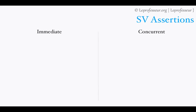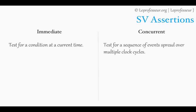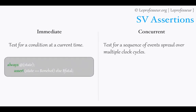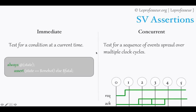Broadly, SystemVerilog assertions can be classified into immediate and concurrent assertions. Immediate assertions test for a condition at the current time. Concurrent assertions test for a sequence of events spread over multiple clock periods. For example, an immediate assertion can check whether the state of a state machine is one-hot encoded or not — if not, you display a fatal error. This check occurs at the current time, whenever the state is triggering.